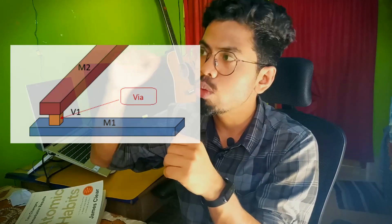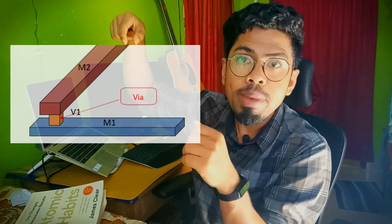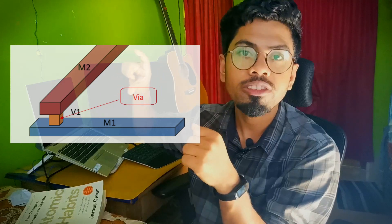For example, if you want to drop a via — a via connects two metal layers by drilling through them — and you do it without care, you might short two connections. For instance, if metal one is your power and metal two is your ground, and you carelessly drop a via, power and ground get shorted. The LVS (Layout versus Schematic) check will tell you that you've shorted the design, and I ran many iterations of LVS checks.